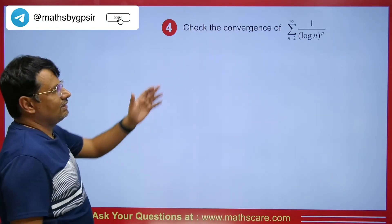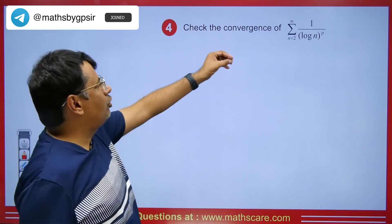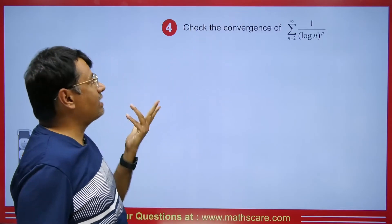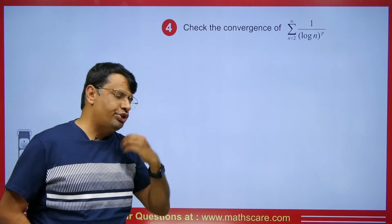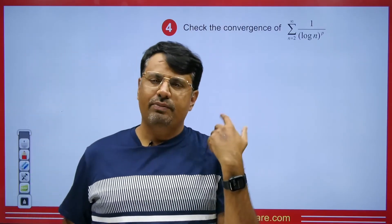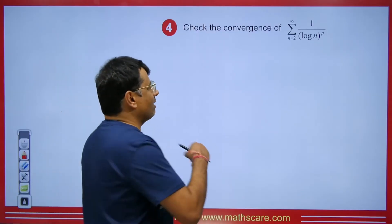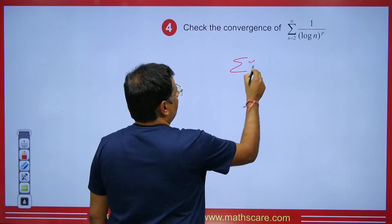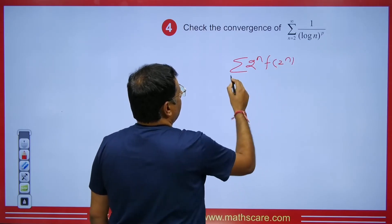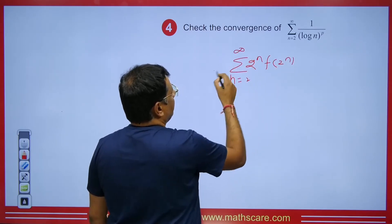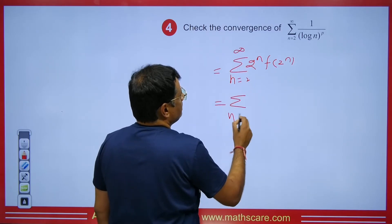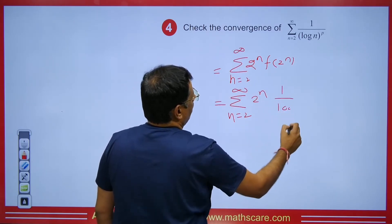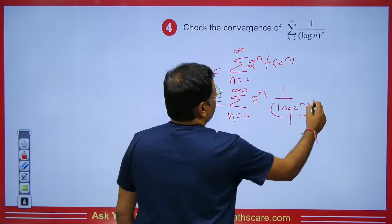Students, you can easily check it. Now look at this question: summation n = 2 to infinity of 1 / (log n)^p is given. How do we find whether it is convergent or divergent by the Cauchy Condensation Test? We could do it by comparison, but let me explain another way. We know that summation n = 2 to infinity of 2^n · f(2^n). Applying it, we get summation n = 2 to infinity of 2^n times 1 / (log 2^n)^p.